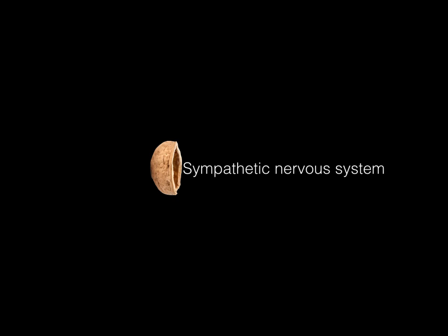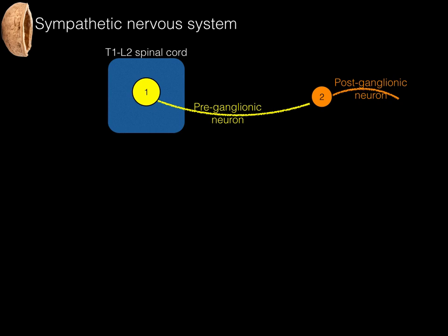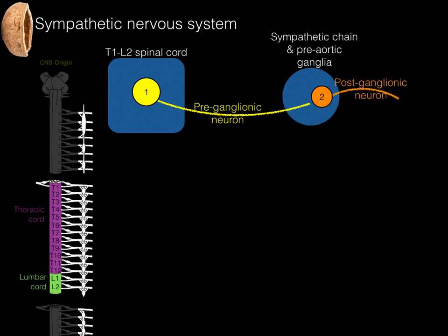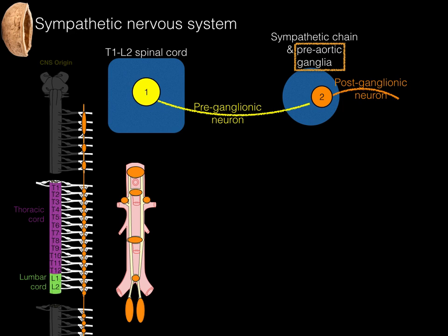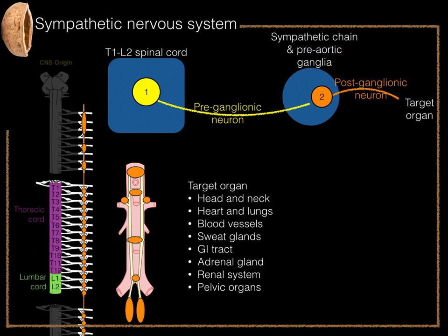In summary, the sympathetic nervous system has a preganglionic sympathetic neuron that synapses with a postganglionic sympathetic neuron. The preganglionic neuron arises in the T1 to L2 spinal cord levels. The postganglionic neuron arises in either the sympathetic chain or the preaortic ganglia, and these pathways hit target organs including the head, neck, heart, lungs, blood vessels, sweat glands, GI tract, adrenal gland, renal system, and pelvic organs.